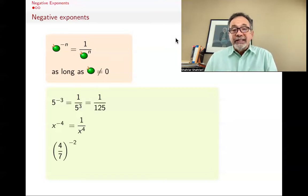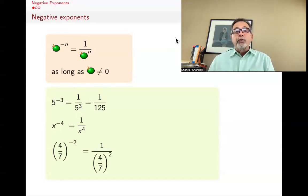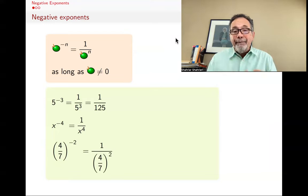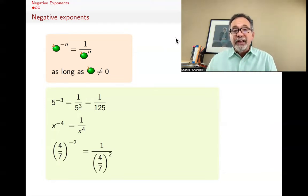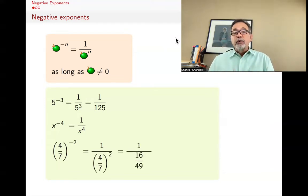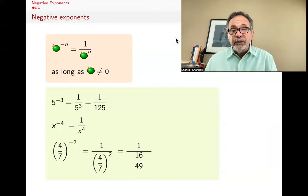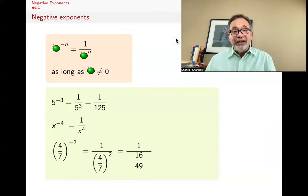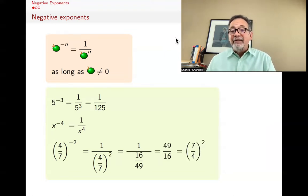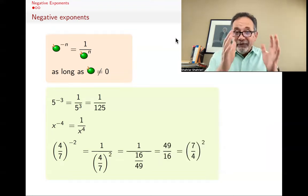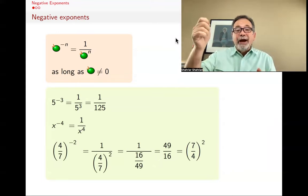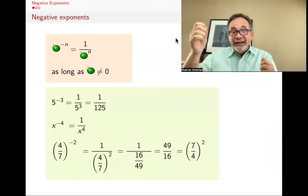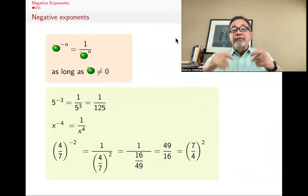What is four-sevenths to the negative two? Well, it's one over four-sevenths squared. Again, apple to the negative n is one over apple to the n. Four-sevenths squared is the same as four-sevenths times four-sevenths, which is 16/49. And one over 16/49 — when you have a fraction like that, the fraction flips — and you get 49 over 16, which is the same as seven-fourths squared. So in fact, if you have a fraction and raise it to a negative power, it's the same as raising it to a positive power but flipping the fraction.